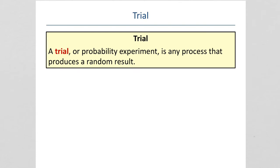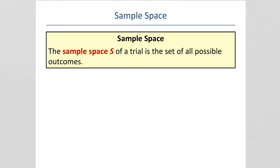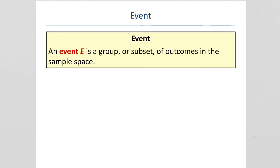We've already discussed those definitions. An event is a group or subset of outcomes in the sample space.